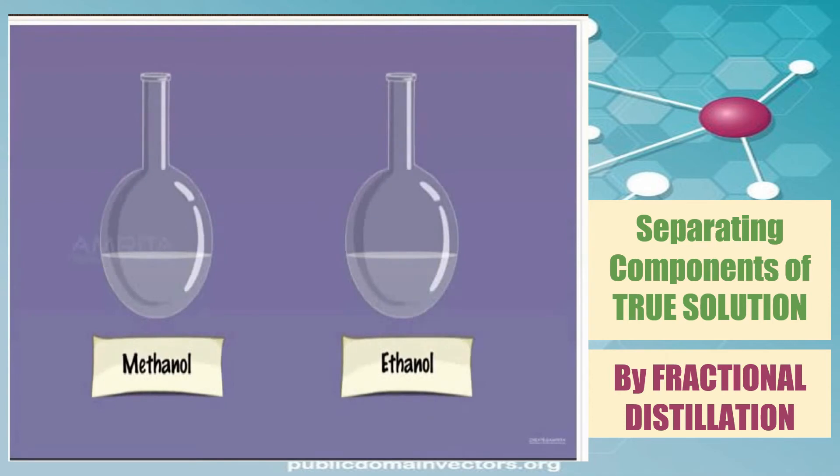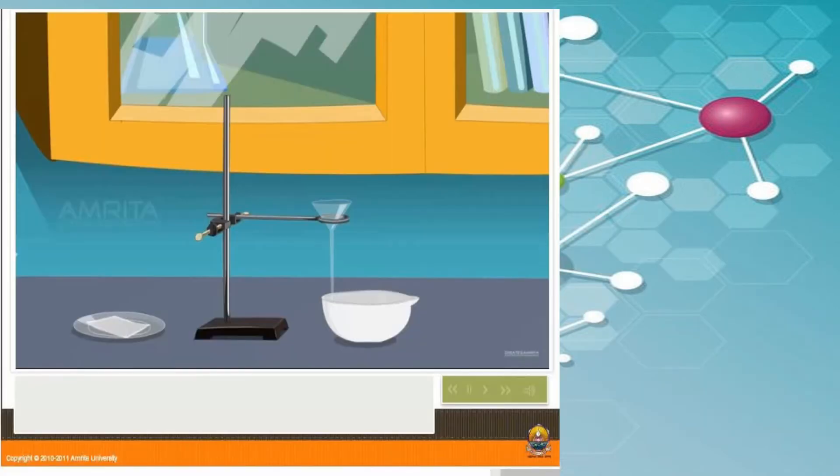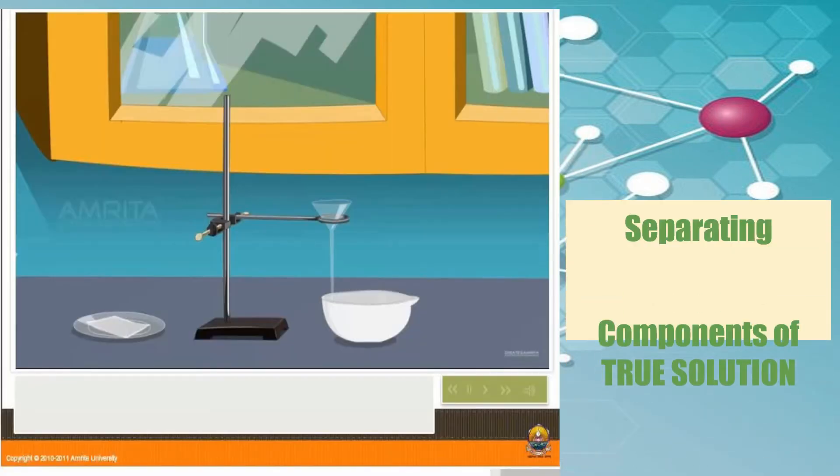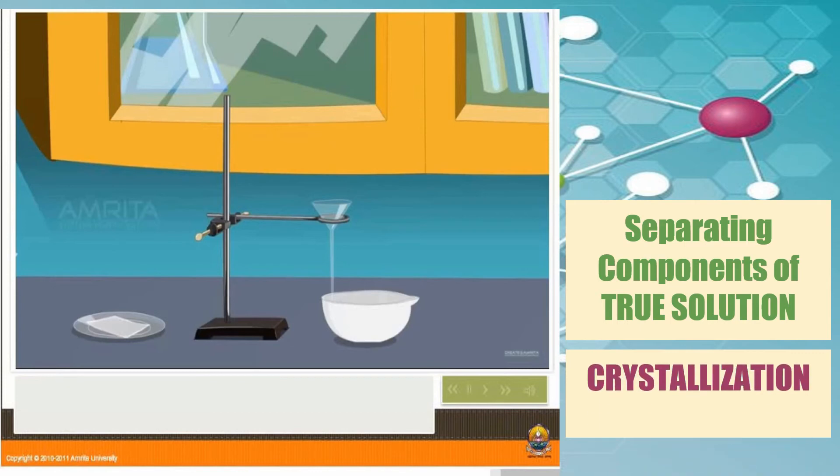That is how we recover the methanol and ethanol by fractional distillation. The components of true solutions can also be recovered or retrieved by crystallization. Let us find out how copper sulfate is retrieved from the mixture using this process.